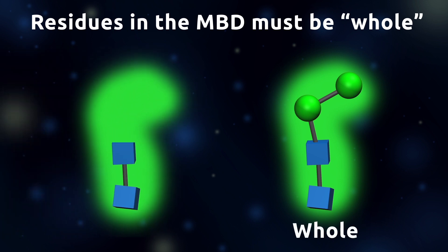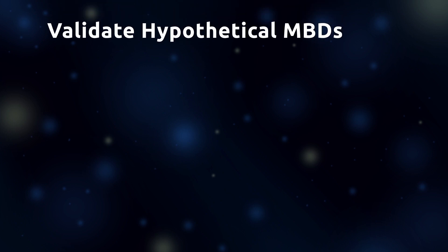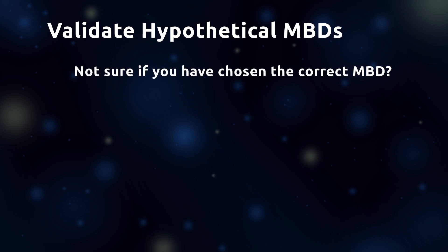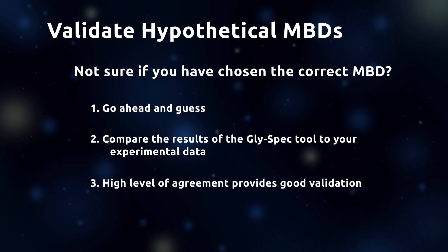Missing residues are common for various reasons, but it is usually possible to make a reasonable guess regarding where the residue should be placed. The GlySpec tool can be used to validate a hypothetical MBD. If you are unsure whether you have chosen the correct MBD, go ahead and make an educated guess, then use the tool and compare the predicted binders and non-binders to your experimental data. A high level of agreement provides good validation for your guess.